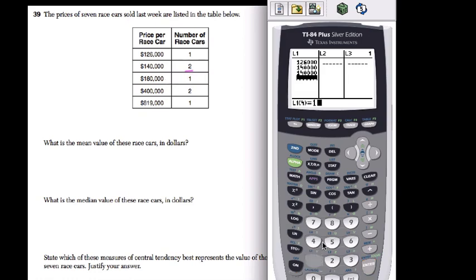And then $180,000 once. And then $400,000 twice. Sorry, it's a little slow. One more time, $400,000. And then $819,000 once.